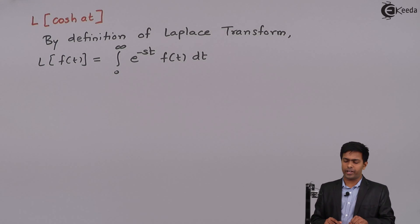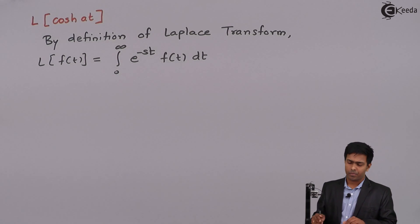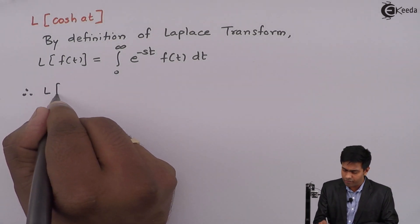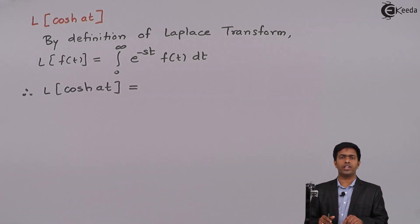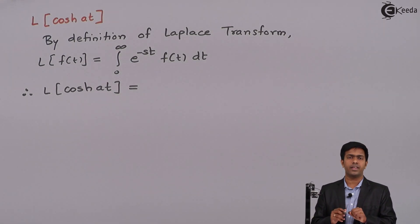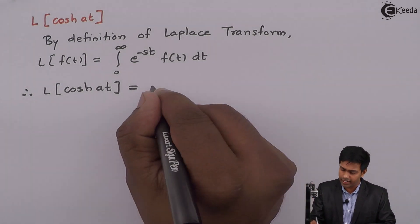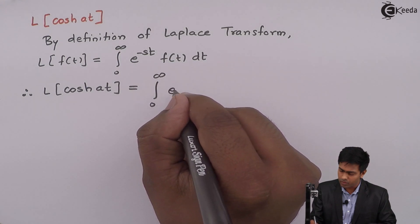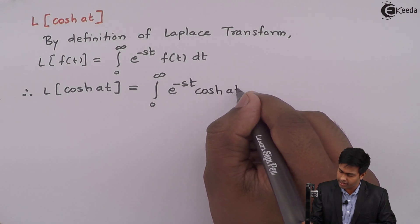As we want to find out the Laplace transform of cosh(at), or hyperbolic cosine at, we start here. Laplace of hyperbolic cosine at. If we compare this with the definition of Laplace transform, we can say that f of t is equal to hyperbolic cosine at. So on the right hand side we substitute f of t as hyperbolic cosine at, giving us the integration from 0 to infinity of e raised to minus st times hyperbolic cosine at dt.